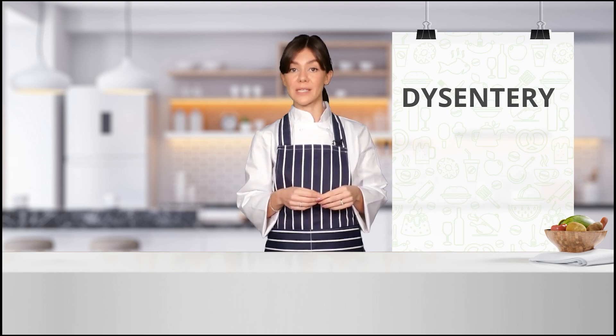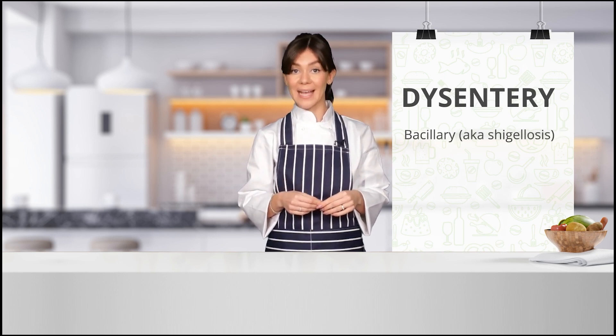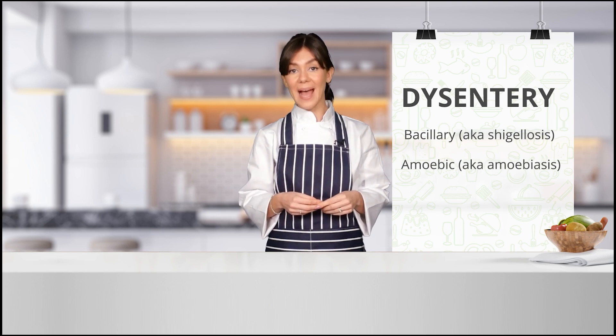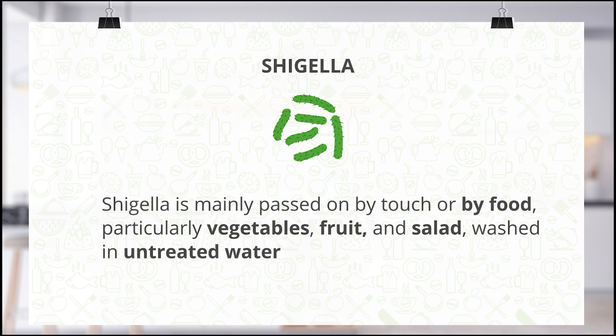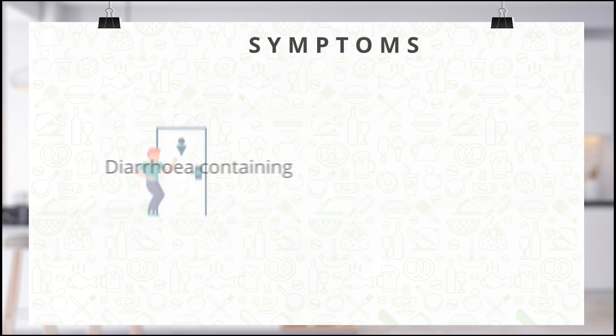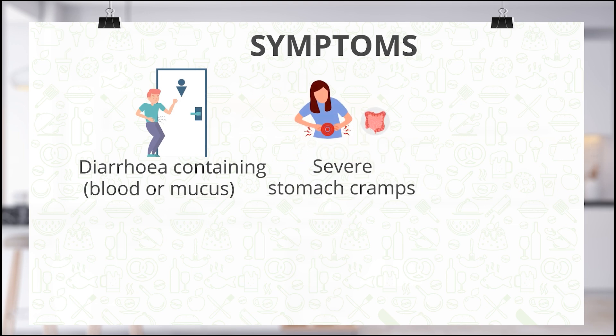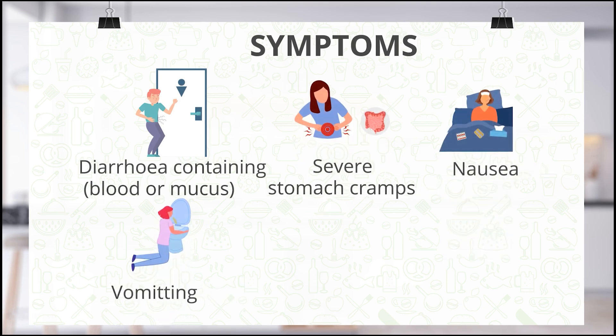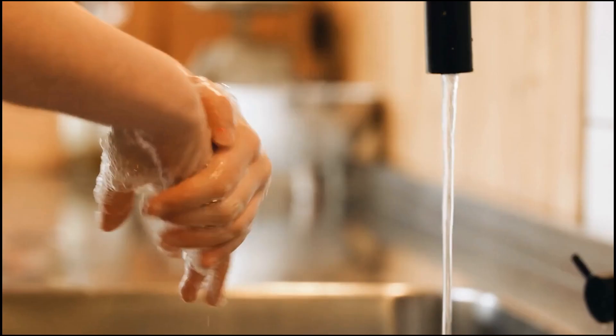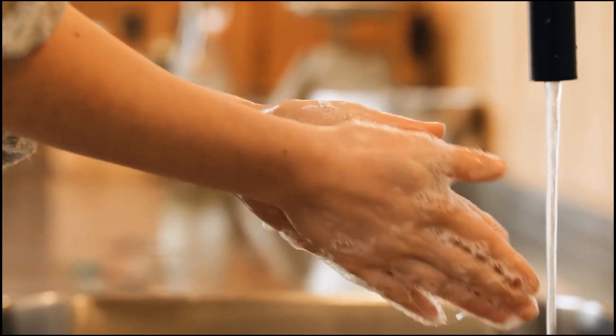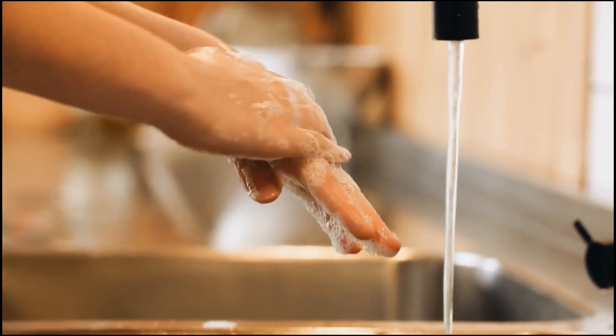We will end this lesson by talking about dysentery. It's caused by the Shigella bacteria, which is highly infectious. There are two main forms: bacillary dysentery, also known as shigellosis, and amoebic dysentery, also known as amoebiasis. Shigella is mainly passed on by touch or by food — particularly vegetables, fruit, and salad washed in untreated water. Symptoms include diarrhea containing blood or mucus, severe stomach cramps, nausea, vomiting, and a fever of 38°C or above.